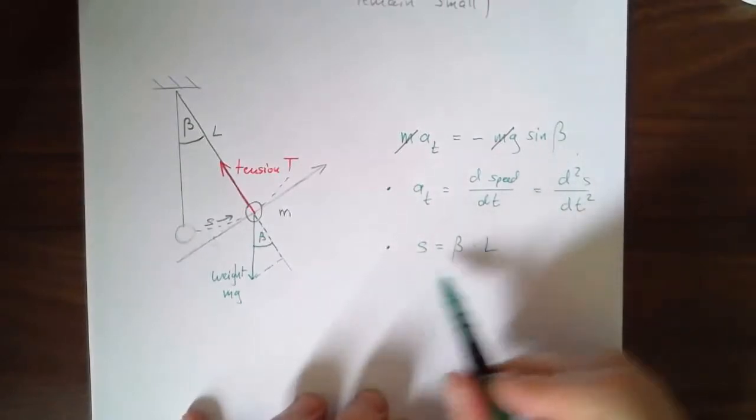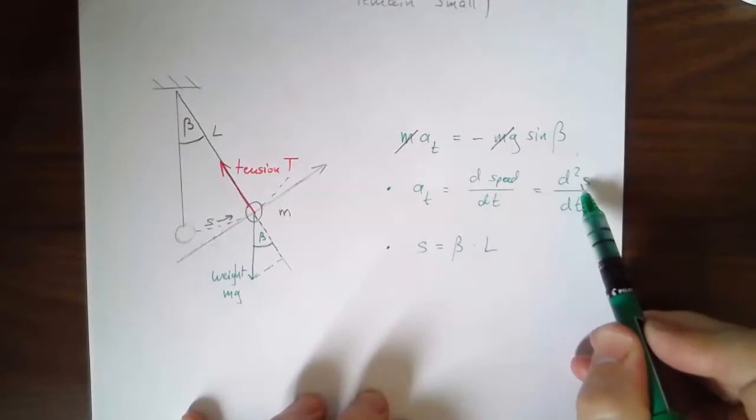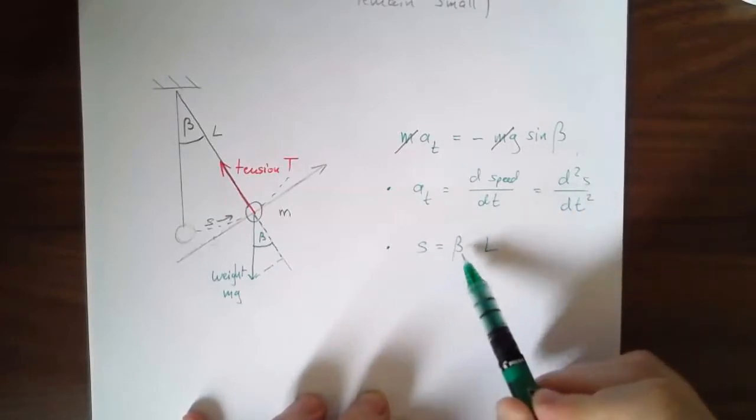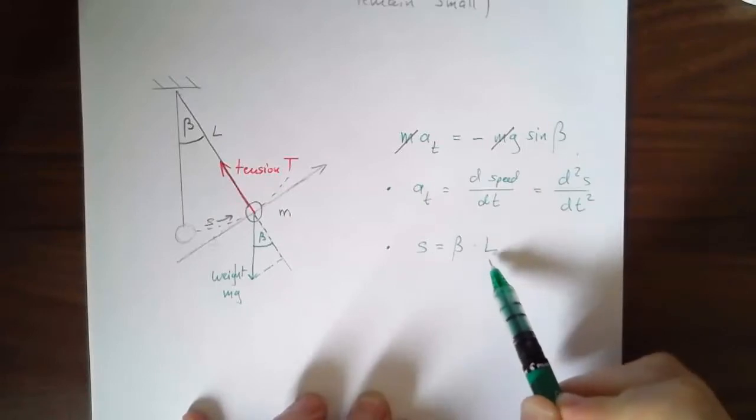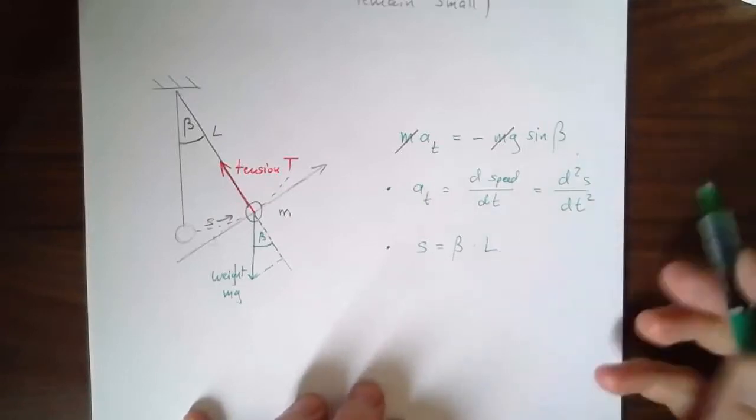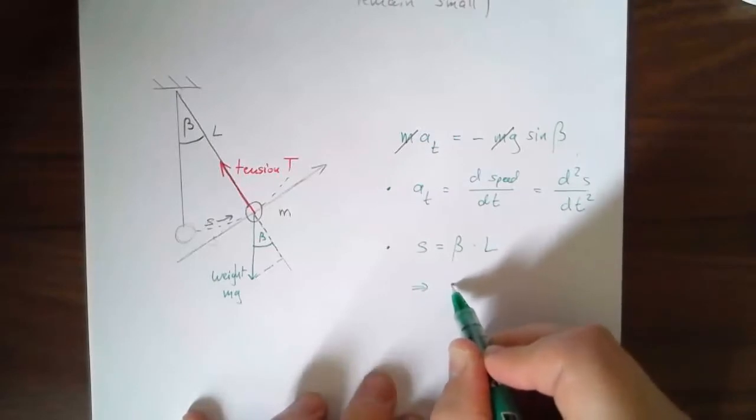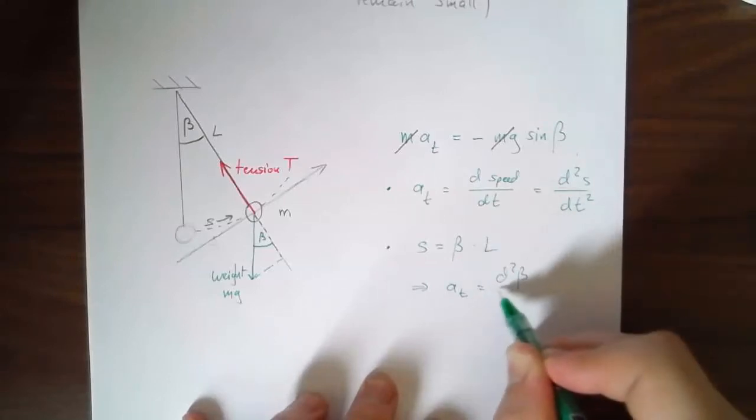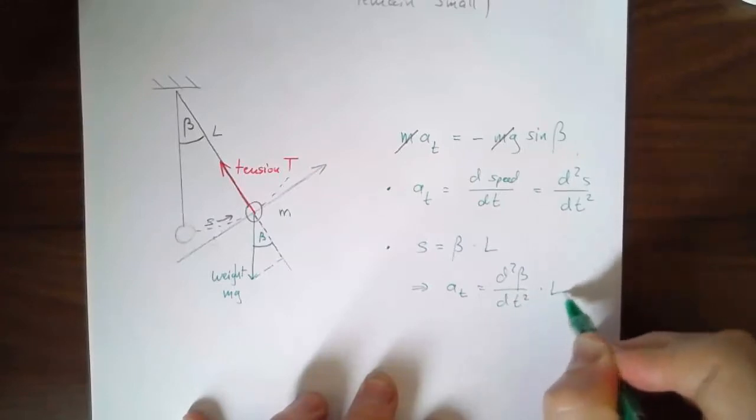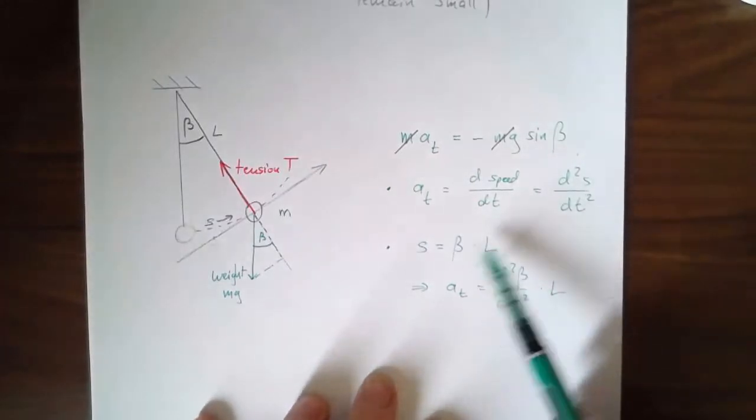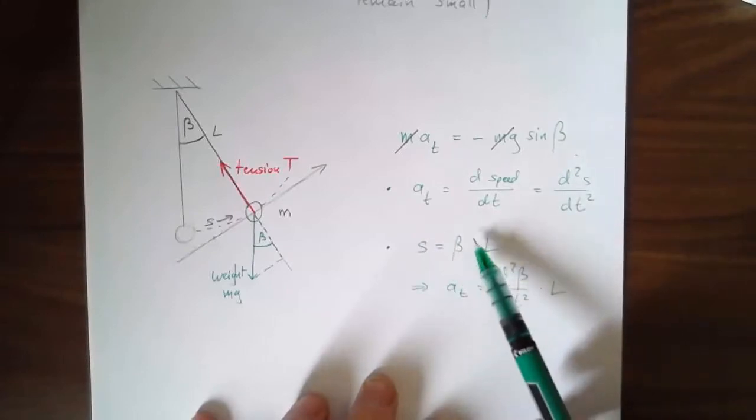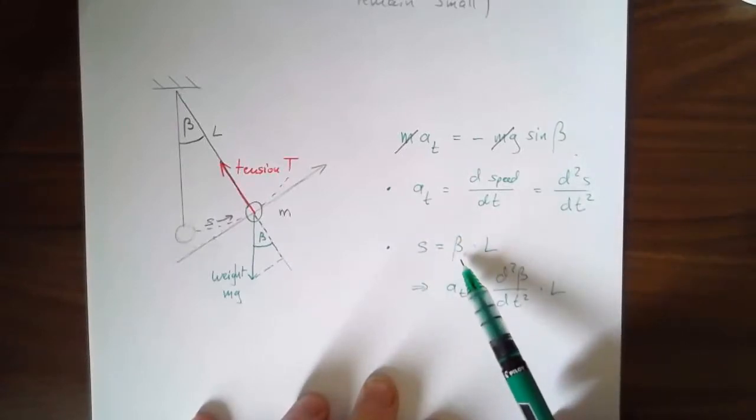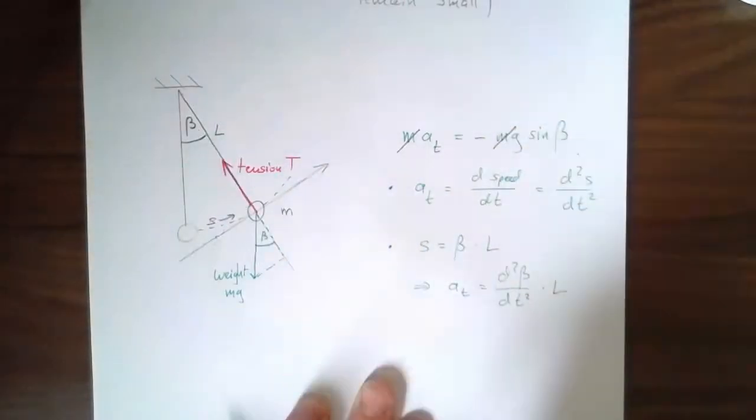So that implies then that at is the second derivative of s, but s itself is equal to this and l doesn't change. So what I'm going to get is that at is equal to, let me write it out, d2 beta dt squared times l, right? Because d2s dt squared, take the second derivative of this, the only variable here is the angle beta. That's the thing that's changing. Let's put those pieces together.